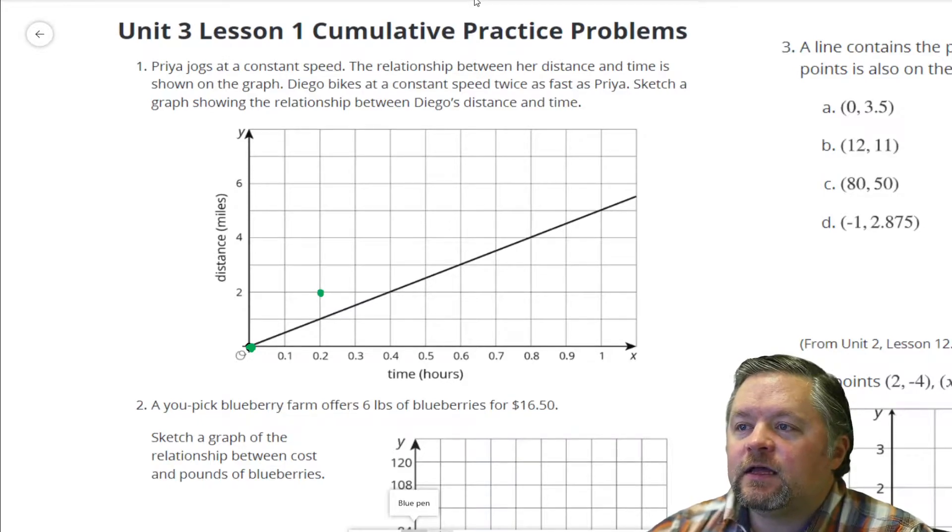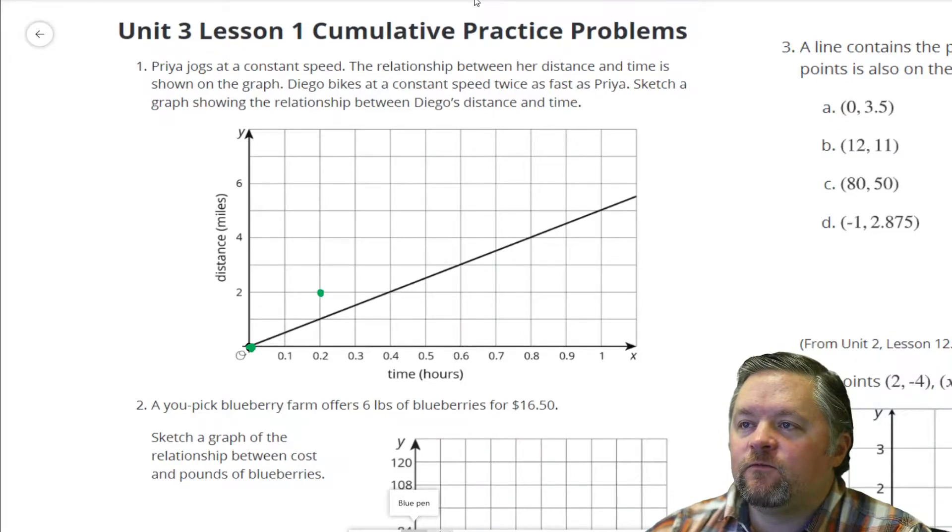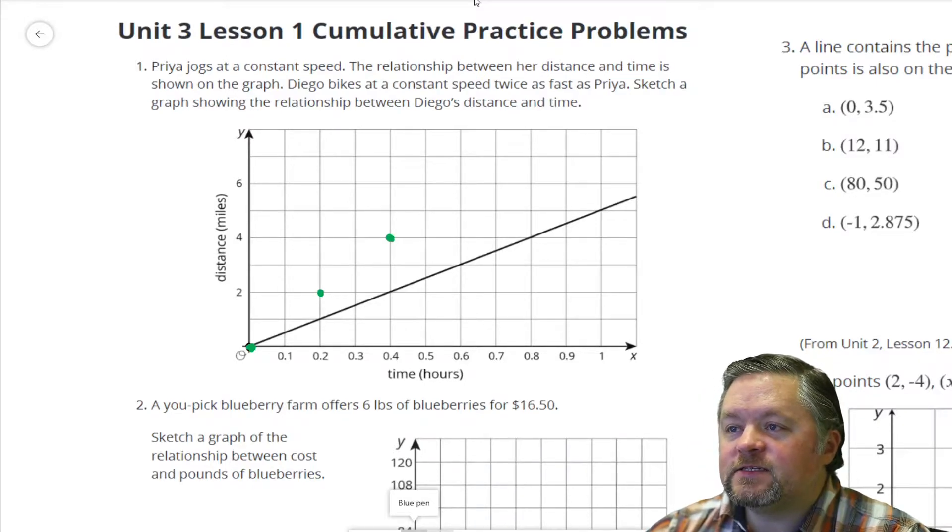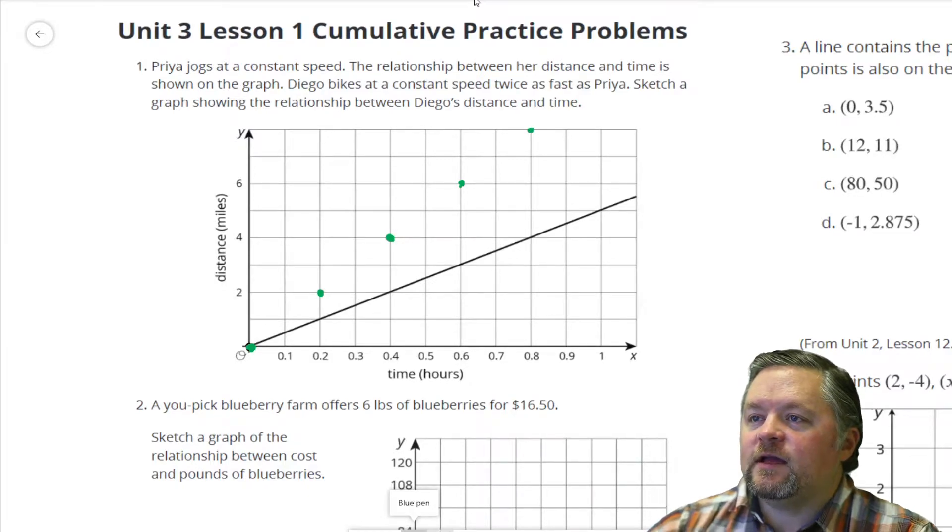If in 0.2 hours, Priya's gone two, Diego will go twice as fast. If in 0.4 hours, Priya's gone two, Diego will go twice as fast. Priya's gone three, so Diego will go six. In 0.8 hours, Priya's gone four, so Diego will go eight.